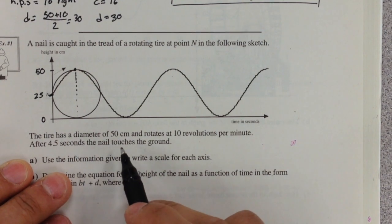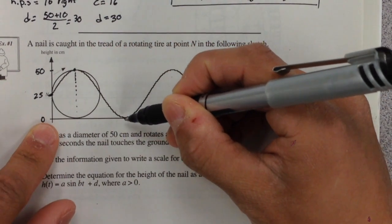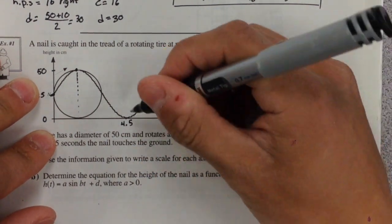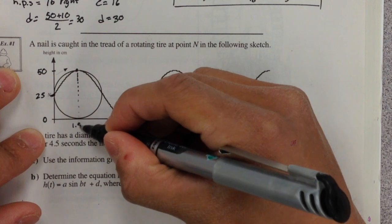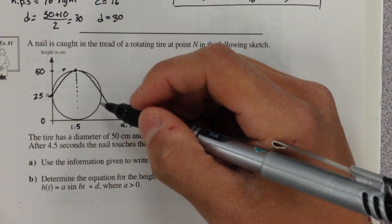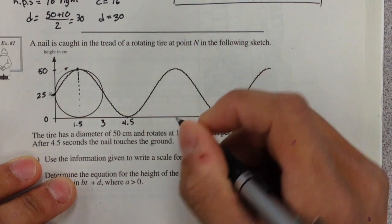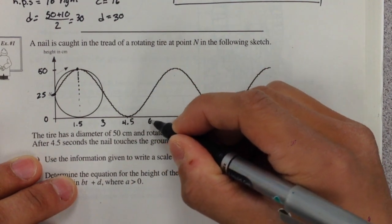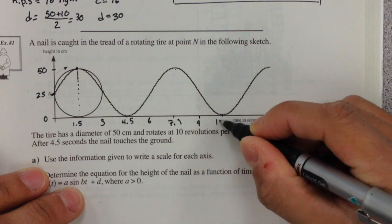After four and a half seconds, the nail touches the ground. So if this is my nail and it follows this rotation, at four and a half seconds, it's going to be at zero on the ground. So this must be 4.5 seconds. When it is at the highest point, we're going to be at one and a half seconds. Two thirds of our motion, we're going to be here at three seconds. So it goes up by one and a half every time.